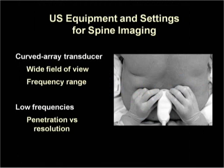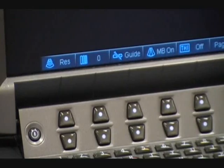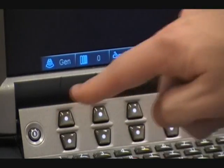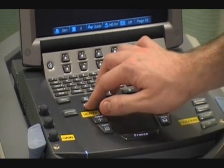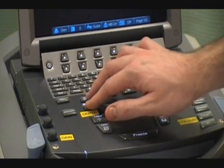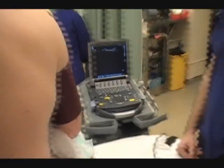A low-frequency, curved-array ultrasound probe is recommended for scanning the adult lumbar spine, particularly in obese patients. The structures of interest are located deep to the skin and low frequencies are necessary for adequate penetration. The wide field of view of a curved array facilitates recognition of the anatomy. The frequency of the probe should be set to the low range and the focus and depth also set appropriately. An initial depth setting of at least 6 cm is usually required.